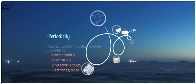They are atomic radius, ionic radius, ionization energy, and electronegativity. Before we start talking about them, please know this: these are trends and not explanations. These are an observation of things that happen, but not an explanation of why they happen.